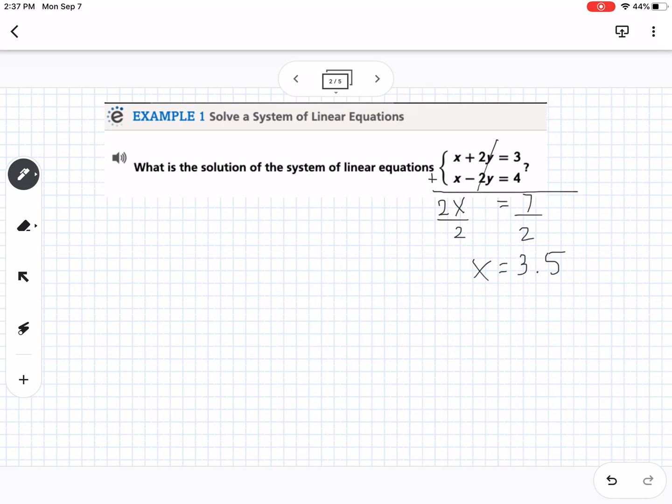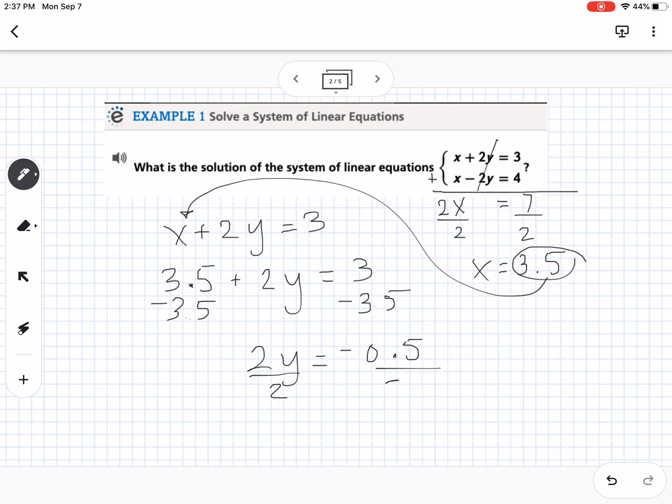Remember to find the other variable, you're not done when you find one. You have to go back and plug in your one variable into one of the original equations. I'm going to use x plus 2y equals 3. I'm going to take the 3.5, plug it in right there. So 3.5 plus 2y equals 3. We solve this, we subtract the 3.5 from both sides, and we get 2y equals negative 0.5. Then we divide by 2, so y equals negative 0.25. That represents the intersection point between those two graphs, so they intersect at the point (3.5, negative 0.25).